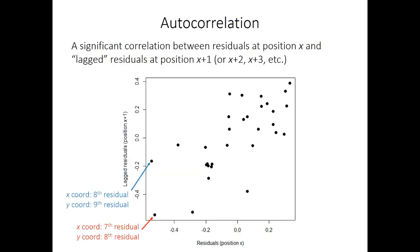That correlation between residuals is called autocorrelation. A scatter plot of the residuals at position x against residuals at position x+1 suggests strong autocorrelation. For example, a point's x-coordinate is the residual of the seventh value in the dataset, and the y-coordinate is the residual of the eighth value — essentially plotting residuals against residuals lagged by one unit. You can also lag by two, three, or more positions and examine the correlation at all those lag levels.